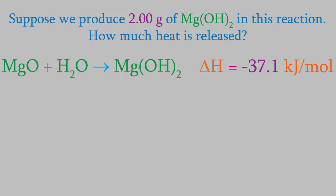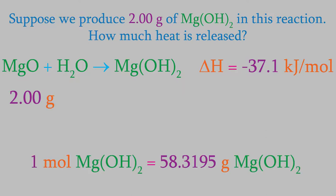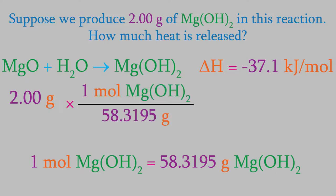Our known, the compound we have information about, is magnesium hydroxide. So first we want to find out how many moles of it we have. There are 2.00 grams, so we can convert that to moles using masses from the periodic table. We find that a mole of magnesium hydroxide weighs 58.3195 grams, so that'll be our conversion factor. We want the grams of magnesium hydroxide to cancel, so that will go in the denominator of the fraction.